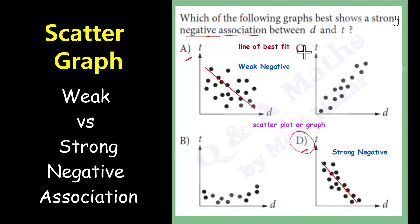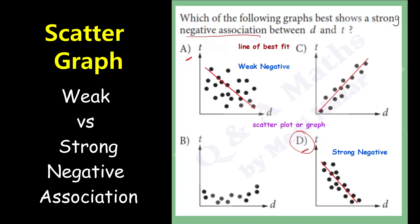If you will notice, letter C shows a different behavior. When D increases, T also increases, so it means that T is directly proportional to D. The line of best fit for this graph shows what is called a positive association. And if the data points are close to this line of best fit, it is called a strong positive association.